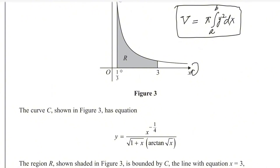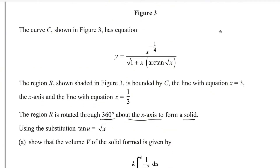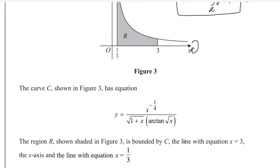Here the limit is given as 1 over 3 to 3, so a is 1 over 3 and b is 3. The value of y is given — just substitute the value of y into this formula to get the volume. Later on we will substitute tan(u) equals square root of x to convert our answer into the required form.